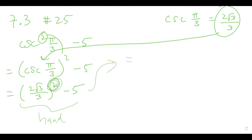So because it's a square, I'm going to write this twice: 2 square root 3 over 3 times 2 square root 3 over 3, and then minus 5. Okay, so let's do this by hand.